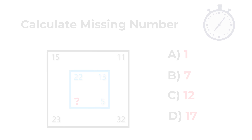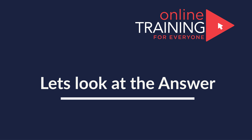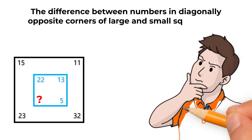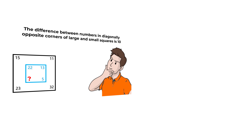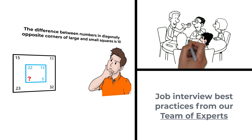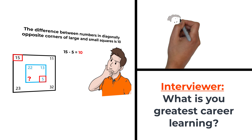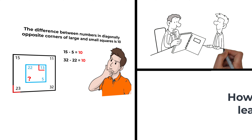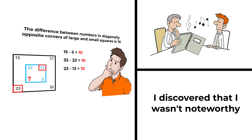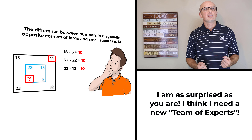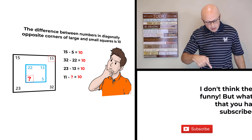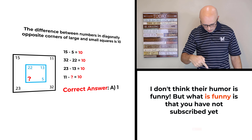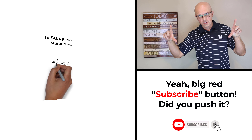The pattern is that the difference between numbers in diagonally opposite corners of the larger and smaller squares is always 10. For example, the upper-left: 15 minus 5 equals 10. Bottom-right: 32 minus 22 equals 10. Lower-left: 23 minus 13 equals 10. So to calculate the missing number, we compute 11 minus 10, which equals 1. The correct answer is choice A, 1. Hopefully you nailed this question.